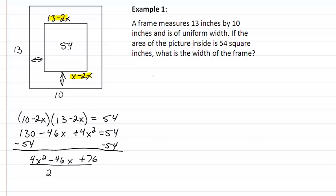All of this is divisible by 2 and it will help us solve this a little bit quicker. So we got 2X squared minus 23X plus 38 equal to 0. This factors easily, so we have 2X minus 19 and X minus 2 equal to 0. So we are going to get X equals 2 and 19 halves.